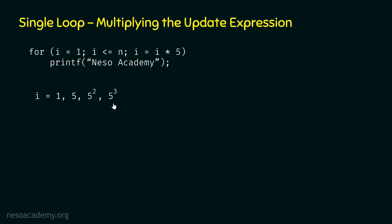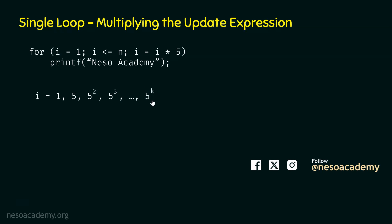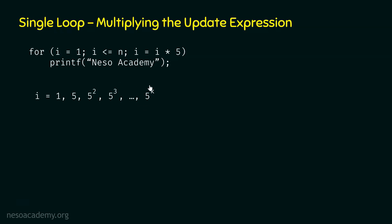These are the values of i across four iterations, and we can observe a pattern. Initially we have 5 to the power 0, then 5 to the power 1, then 5 power 2, then 5 power 3. This will continue up to 5 power k. I am assuming that 5 power k is equal to N — meaning this is the last value of i for which the condition is satisfied. After this, the value of i will be greater than N and the loop will terminate.